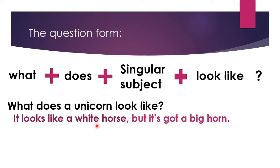The answer: 'It looks like a white horse' — هو يشبه a white horse الحصان الأبيض. Here we add 's' to the verb 'look' لأن الفاعل is singular مفرد. لذلك أضفنا 's' — 'it looks like' يشبه a white horse. But لكن 'it has got a big horn' — لديه قرن كبير. ليس دائما نستخدم في الإجابة 'looks like.'